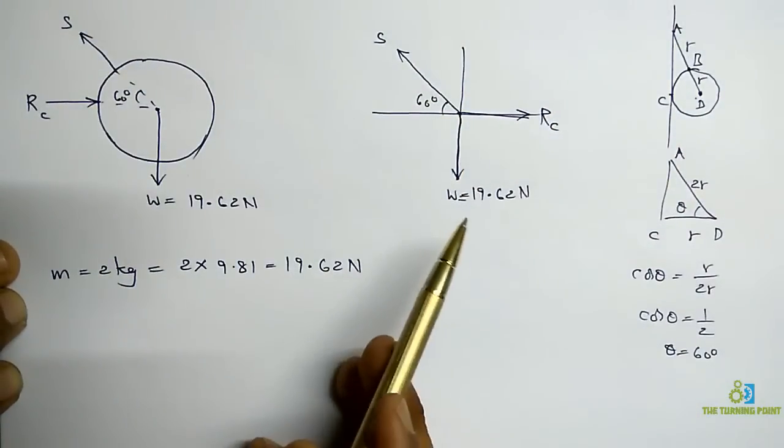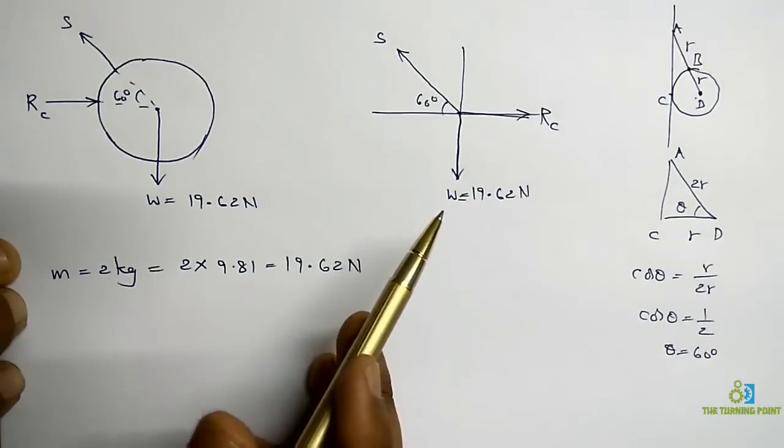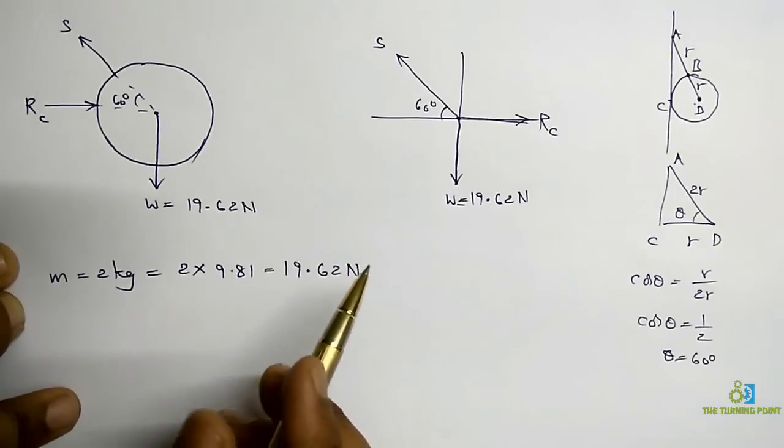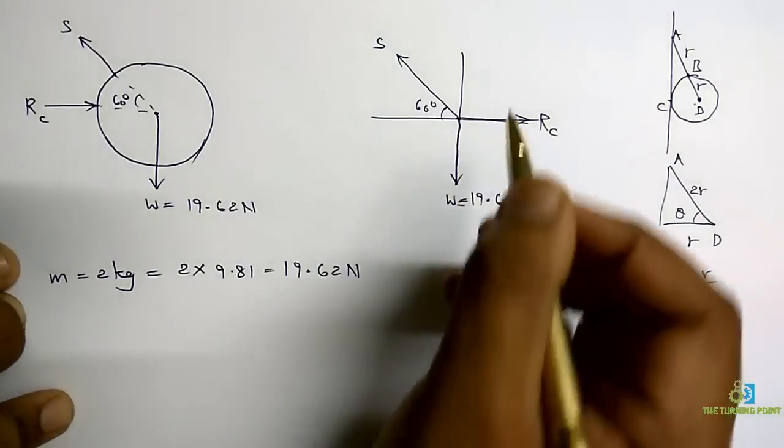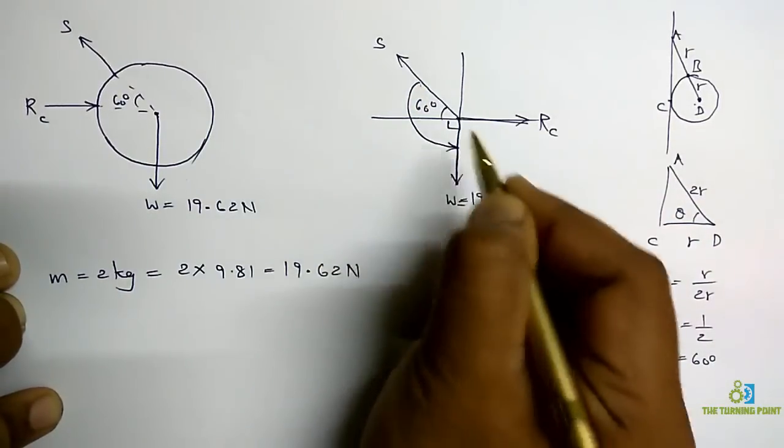So here there are 3 forces and that too the system is under equilibrium. So I can apply Lami's theorem. In order to apply Lami's theorem I should find the angle between each and every force. This is 60 and this is 90. 60 plus 90. Total angle is going to be 150 degrees.